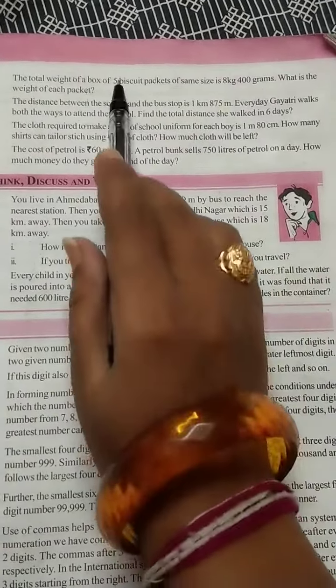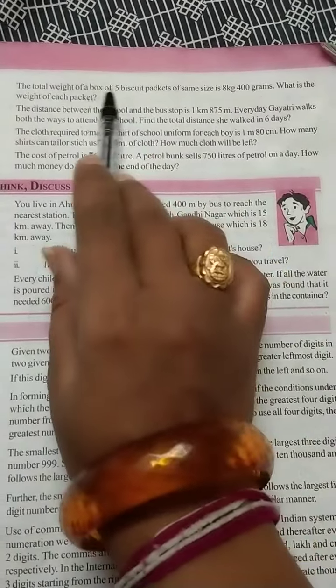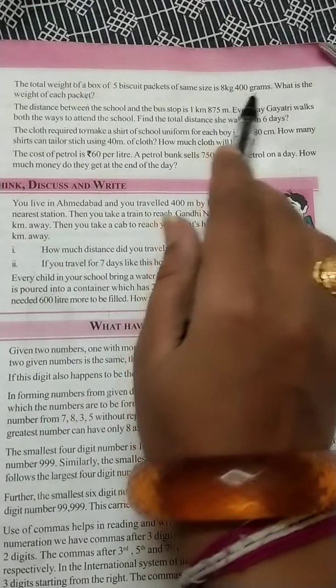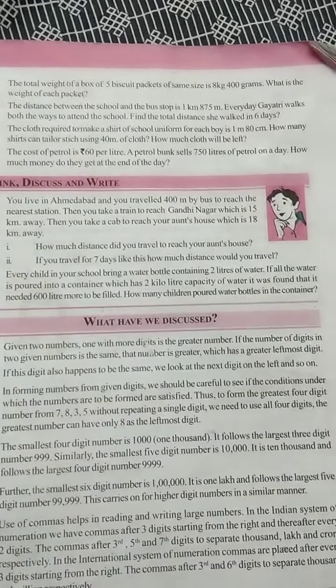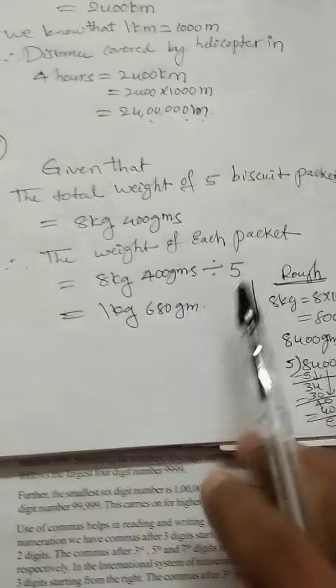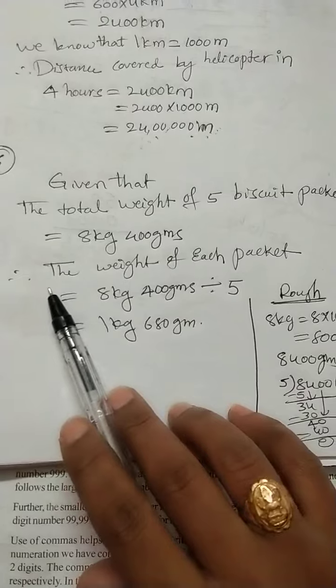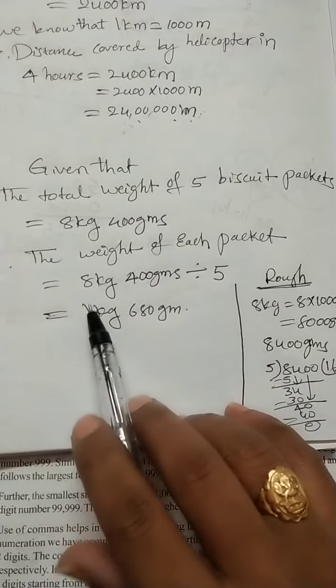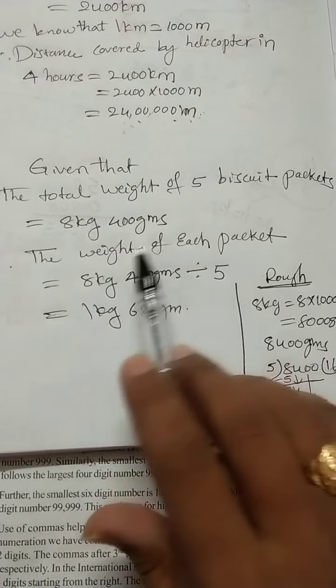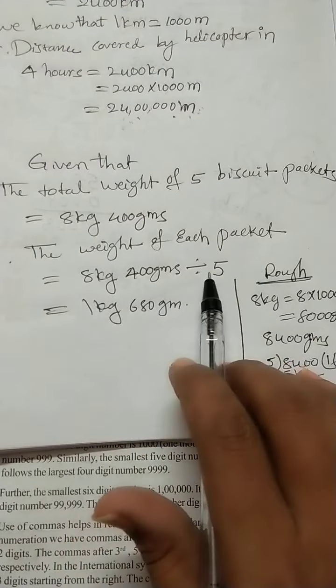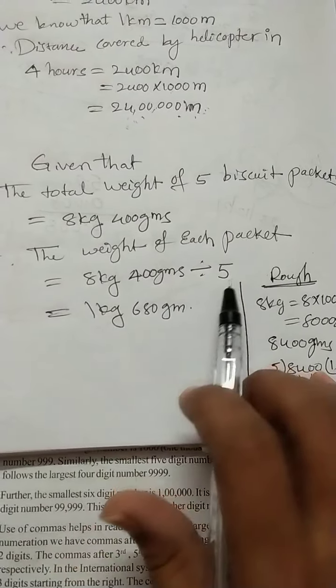Total weight of 5 biscuit packets is 8 kg 400 grams. To find the weight of each packet, we should divide the total weight by 5.